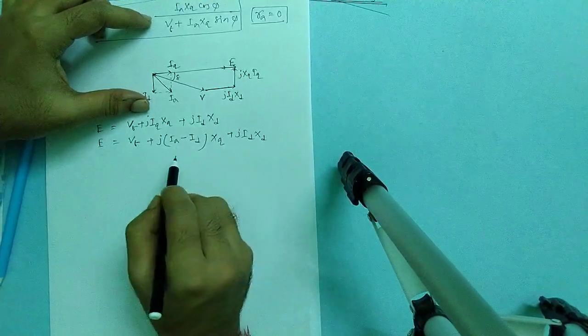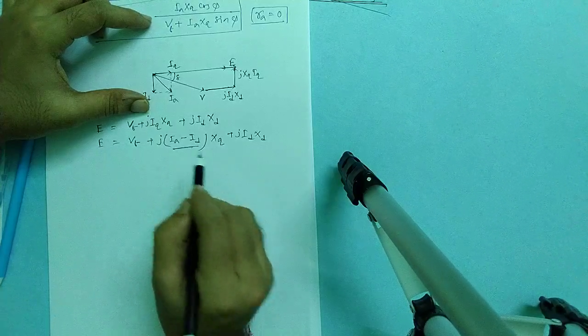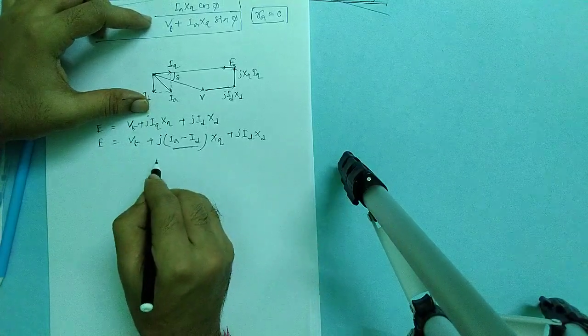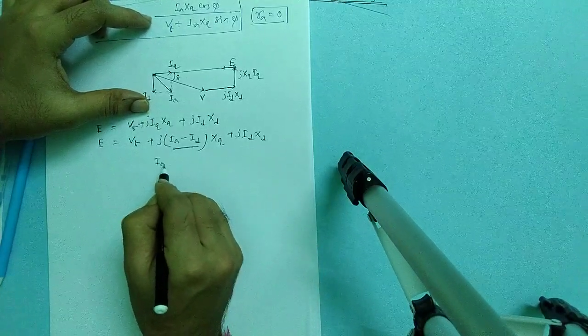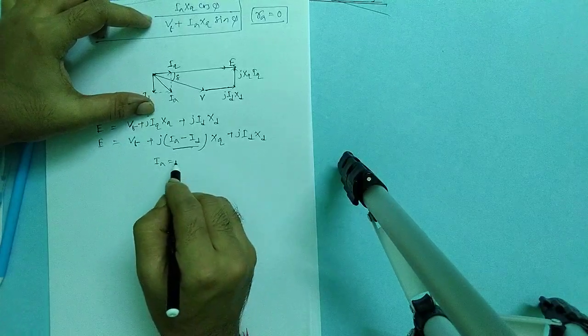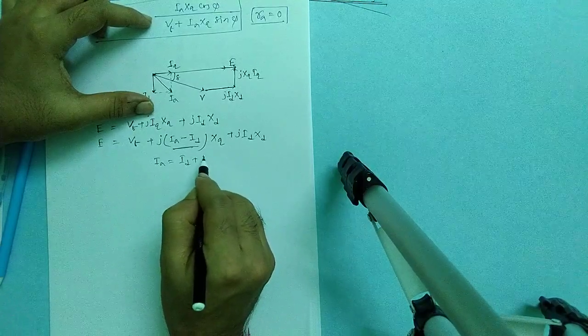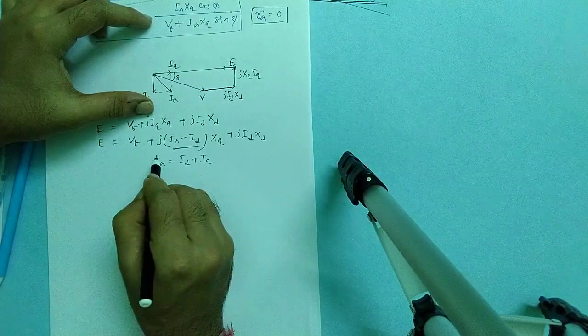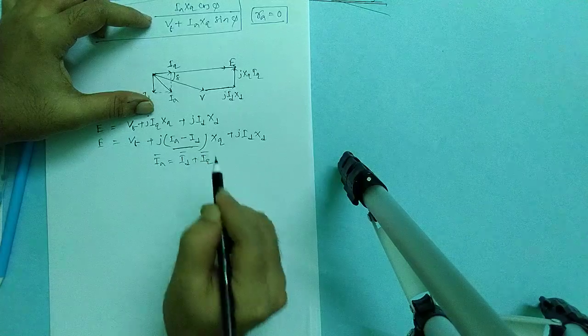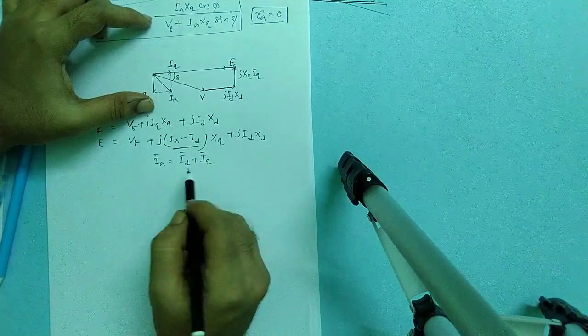We can write it as V_t plus J of i_a minus i_d X_q plus J of i_d X_q. Why I have written like that? We know that i_a is i_d plus i_q, obviously phasor sum.